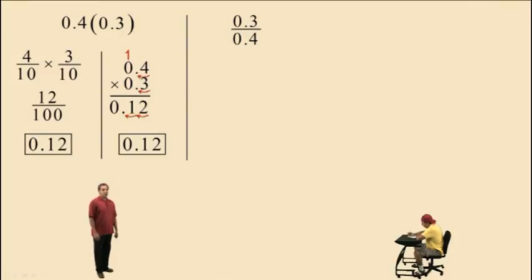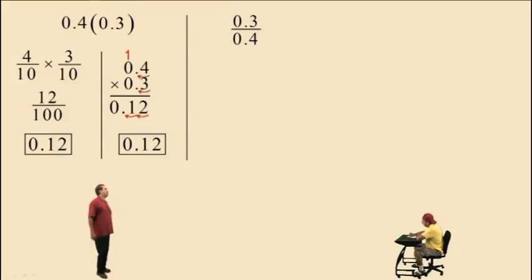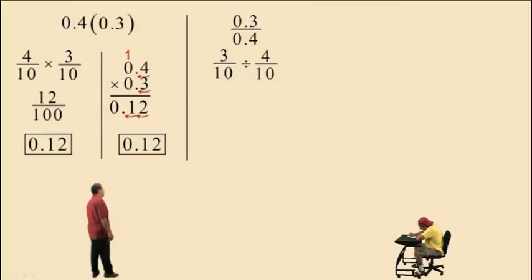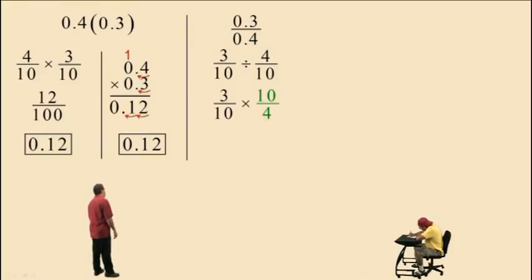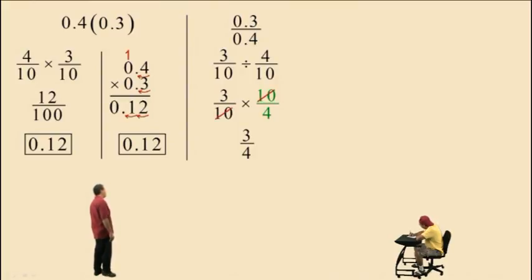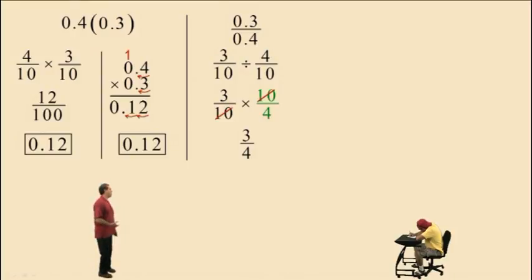How about a division problem with decimals? Don't get scared. Here we have three tenths divided by four tenths. Let's first convert the decimals to fractions. Three tenths divided by four tenths — what do we do when we divide with fractions, Charlie? Multiply by the reciprocal. So we have three tenths times ten-fourths. Now we can cross cancel: tens cancel, leaving us with the result of three-fourths. And three-fourths as a decimal is seventy-five hundredths — zero point seven-five.